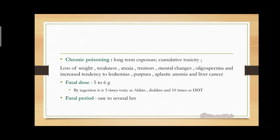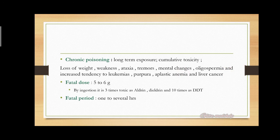Chronic poisoning involves long-term exposure with cumulative toxicity, where the toxin is gradually added. It is characterized by loss of weight, weakness, ataxia, tremors, mental changes, oligospermia, increased tendency to leukemia, purpura, aplastic anemia, and liver cancer.